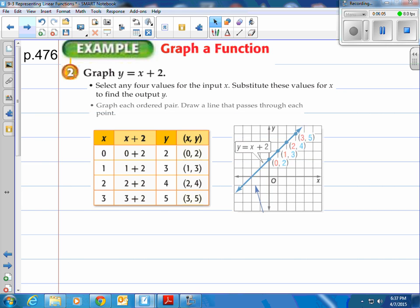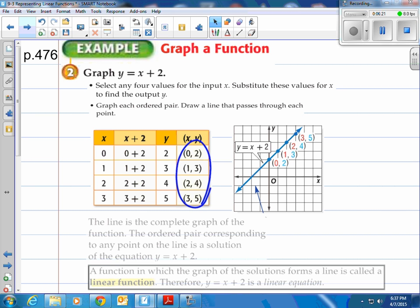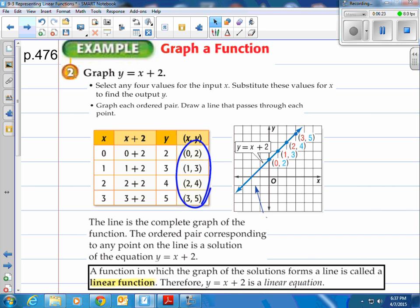Now, of course, let's graph them. Graph each ordered pair. Draw a line that passes through each point. So they graphed every one of these points. And then they actually connect the dots here. Since there's no story, and you can have all the numbers in between them, you can actually have a complete line. So it says, the line is the complete graph of the function. The order pair corresponds to any point on the line. And that's a solution of the equation y equals x plus 2. And again, these here are linear functions. A function in which the graph of the solutions forms a line is called a linear function. Therefore, this one, y equals x plus 2, is a linear function. Because you can see the line there. They all line up real nice.